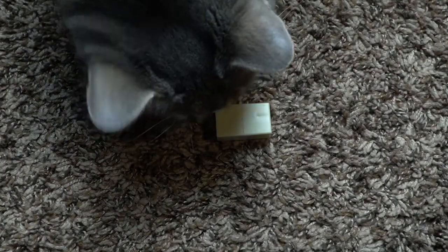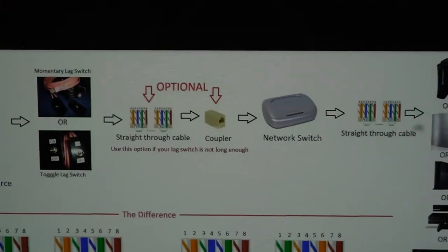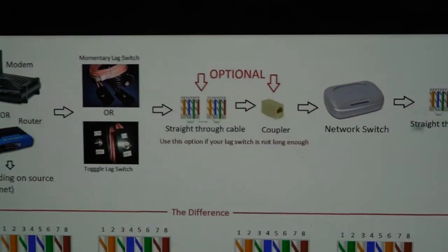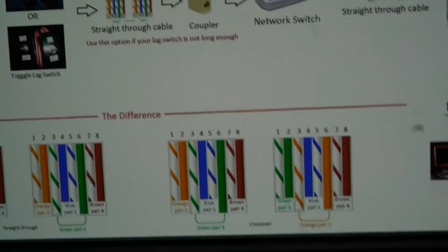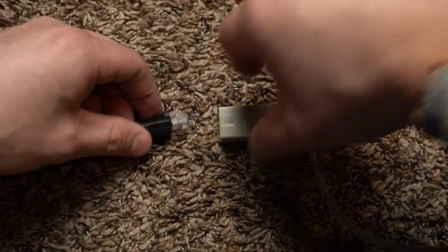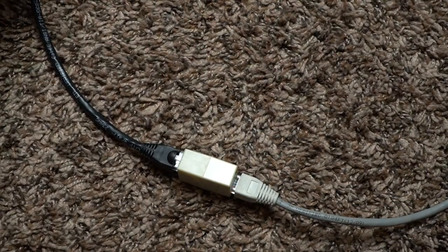This device is optional — it's not meant for you. According to the item pictures, the coupler is right in the middle of the setup. That device is optional; you don't need it. If for some reason your lag switch is too far away from the network switch or the router, then you will need a coupler and a straight-through cable. You take your lag switch wire, plug it into one end, plug it into the other end. Now your lag switch is longer and you can plug it into the network switch or the router.